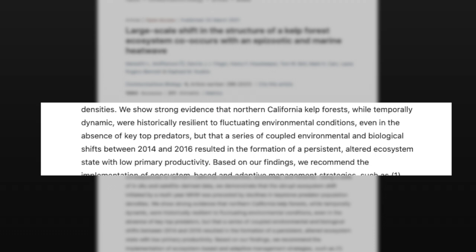We show strong evidence that Northern California kelp forests, while temporarily dynamic, were historically resilient to fluctuating environmental conditions, even in the absence of key top predators, but that a series of coupled environmental and biological shifts between 2014 and 2016 resulted in the formation of a persistent altered ecosystem state with low primary productivity. And those are the urchin barrens that are discussed in the phys.org paper.